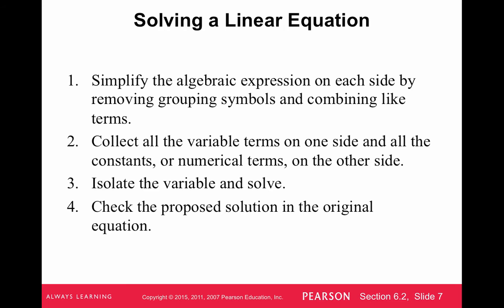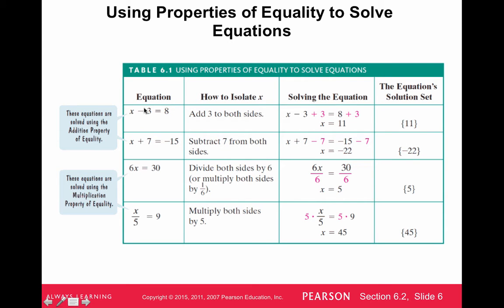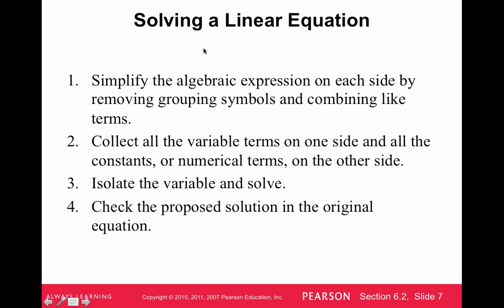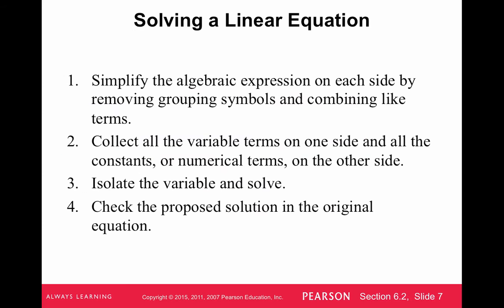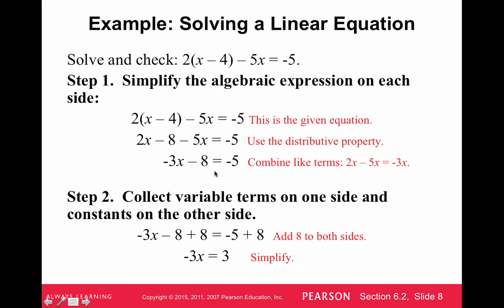General steps in solving a linear equation. This is just the basics of whenever we have a minus, we add. Whenever we have a plus, we subtract. Whenever we have a times, we divide. And when we have a divide, we multiply. But the general steps to solve a linear equation: we want to simplify the expression on both sides first by combining like terms and getting rid of parentheses and stuff like that. Then we collect all variable terms on one side. Both of these are simplify both sides. Then we isolate the variable and solve. Isolating the variable would involve these steps, doing the opposite operation than the operation we see. And then we check the proposed solution in the original equation. We just plug back in.